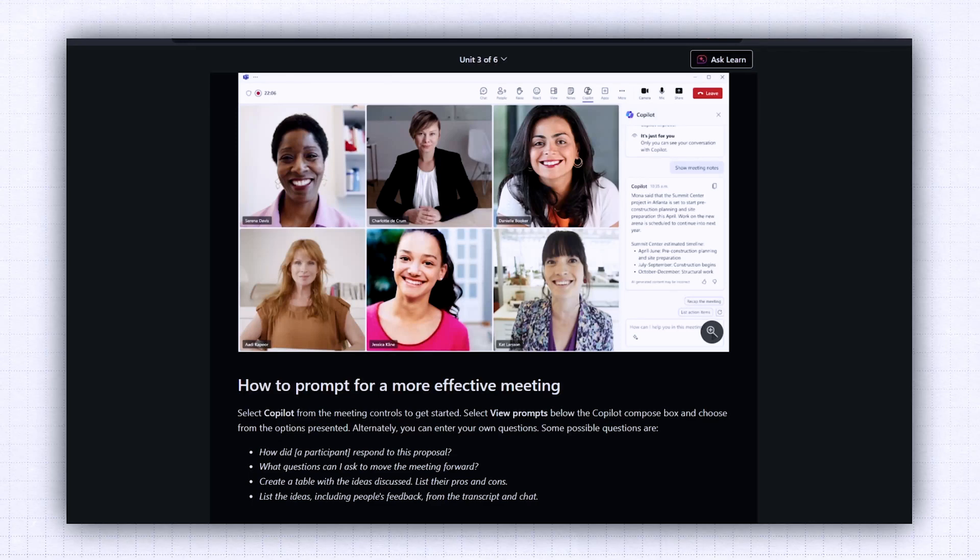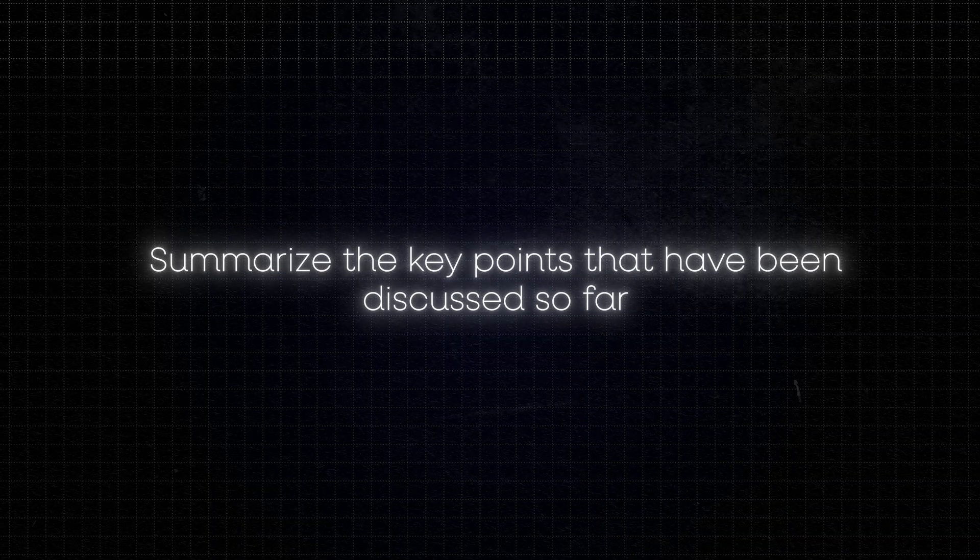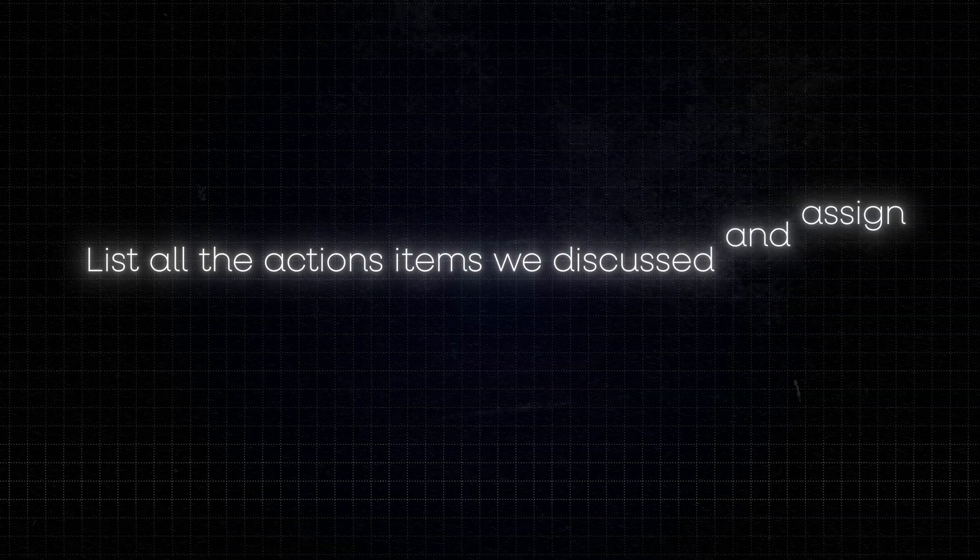When you're in live meetings, Copilot can also act like a virtual assistant — managing your agenda, keeping track of time, or privately guiding the discussion. If a meeting loses focus, you can ask 'what questions can I ask to move this meeting forward?' If you join halfway through, you can prompt 'summarize the key points discussed so far,' and Copilot shows you on a window only visible to you. After the meeting, you can ask it to list all action items with deadlines and owners, then copy-paste that into Outlook as a follow-up email.